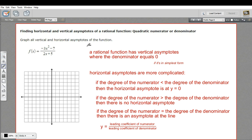So vertical, always the easiest. You just take the denominator, set it equal to 0. So I've got 2x plus 5 on the denominator. We want to find where that equals 0.